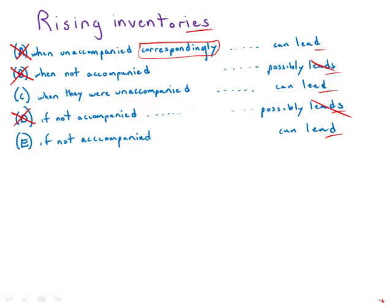odd indirect construction. First of all, 'rising inventories when they were unaccompanied' - very wordy. And also the verb choice is wrong. Everything about the sentence is in the present tense, and this is the only choice that puts it in the past tense.